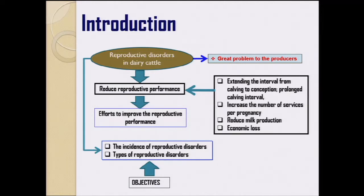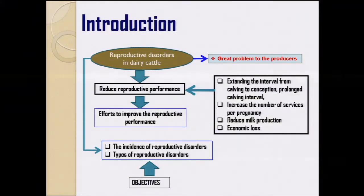Introduction. As we know, reproductive disorder in dairy cattle is a great problem to the producer, in both large farms as well as small farms. If this occurs, it reduces reproductive performance by extending the interval from calving to conception and subsequently prolongs calving interval. This also increases the number of services per pregnancy, reduces milk production, and finally causes economic loss. That is why we need efforts to improve reproductive performance by addressing this reproductive disorder.